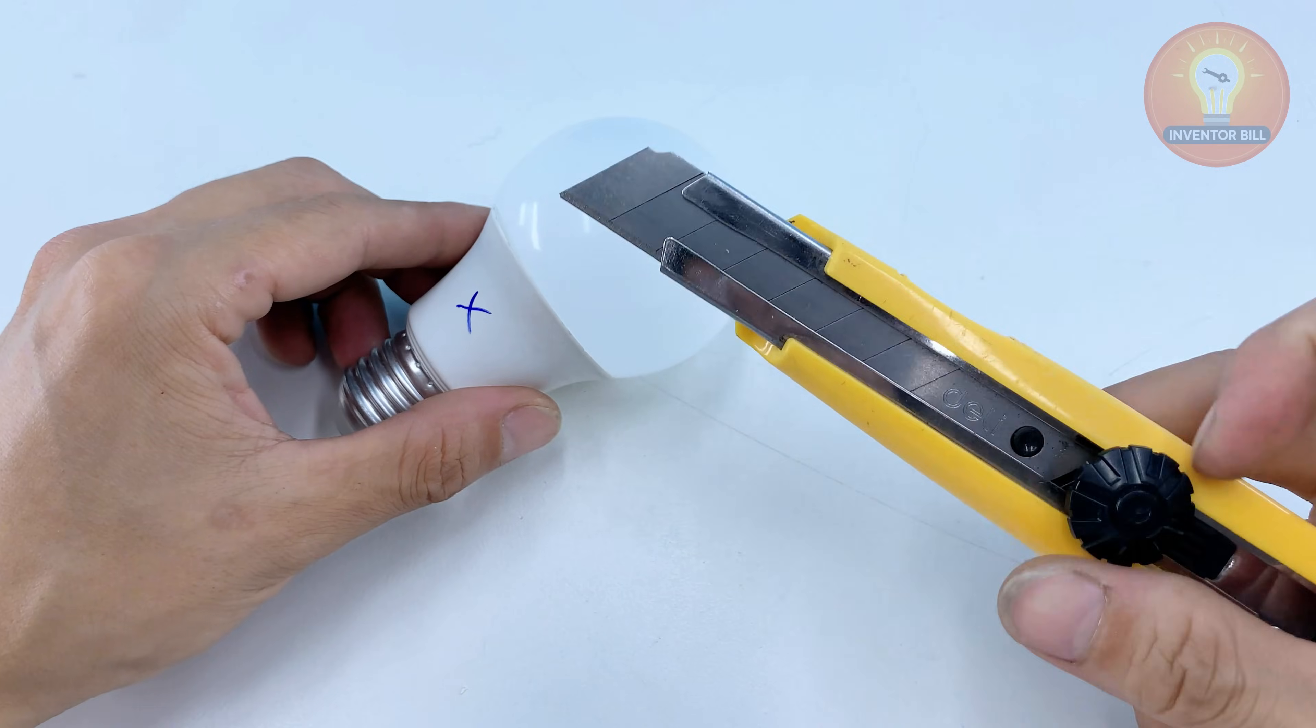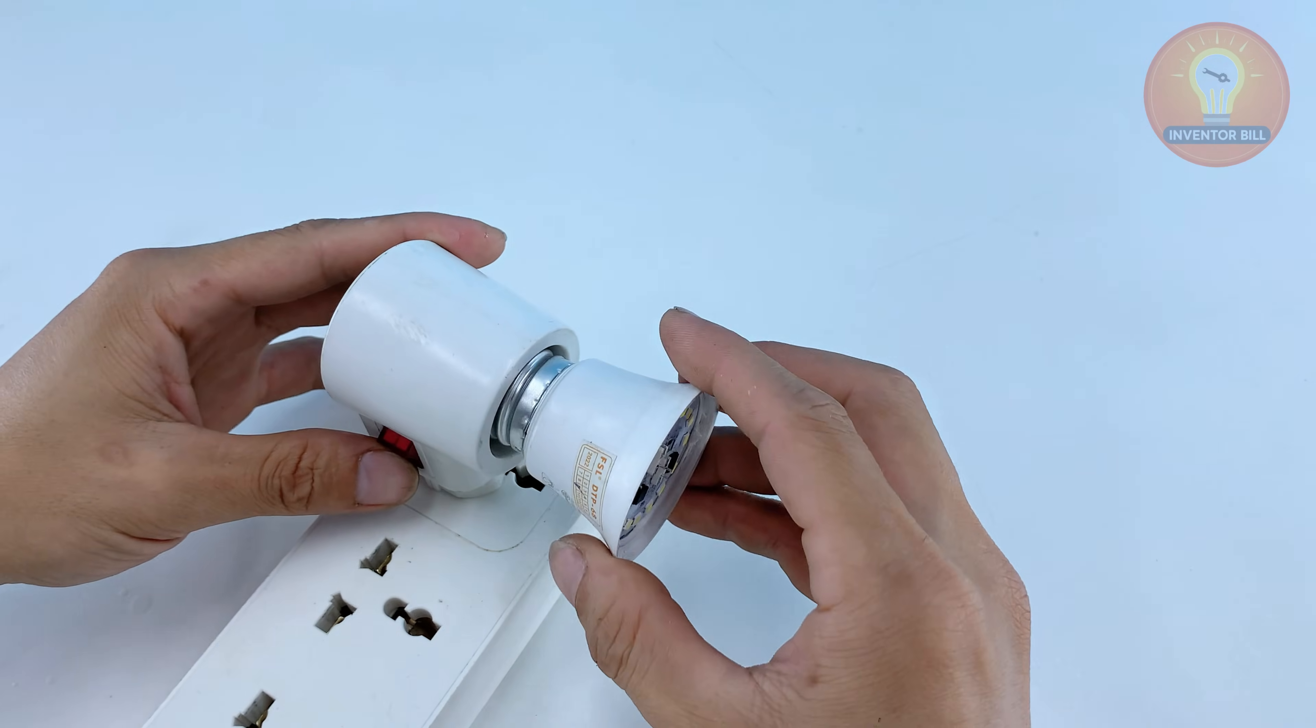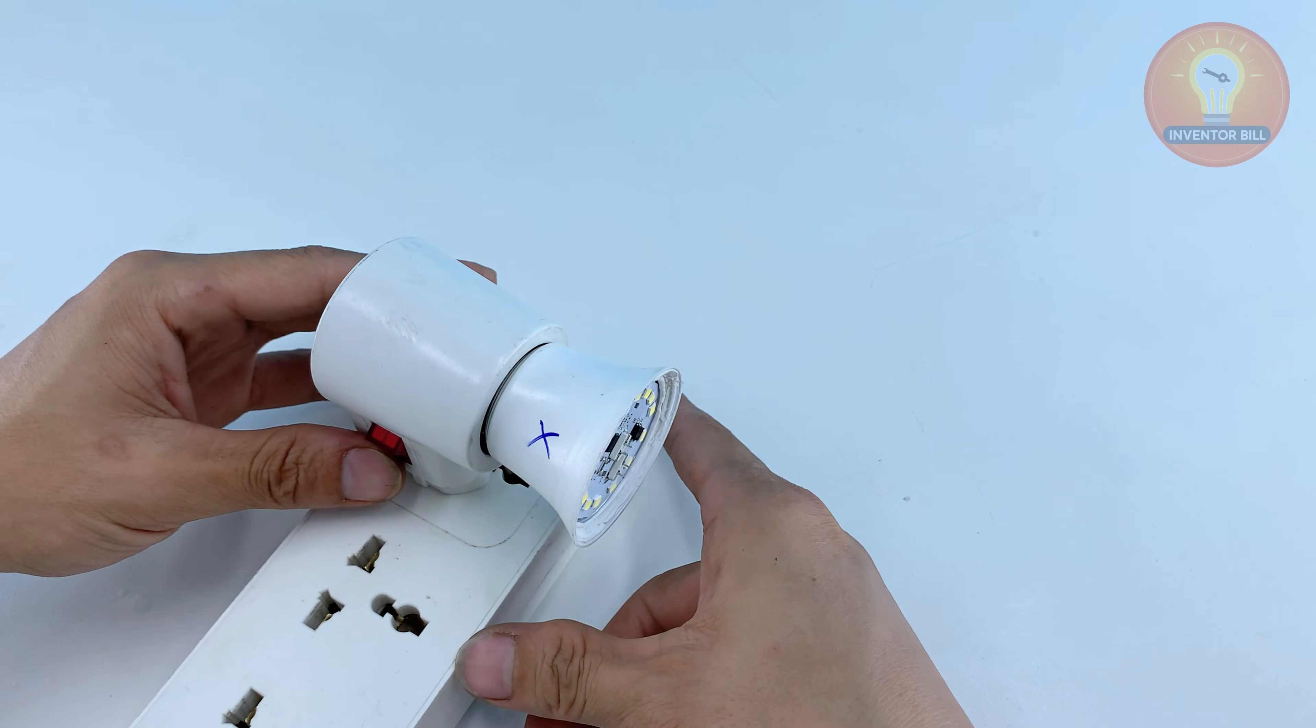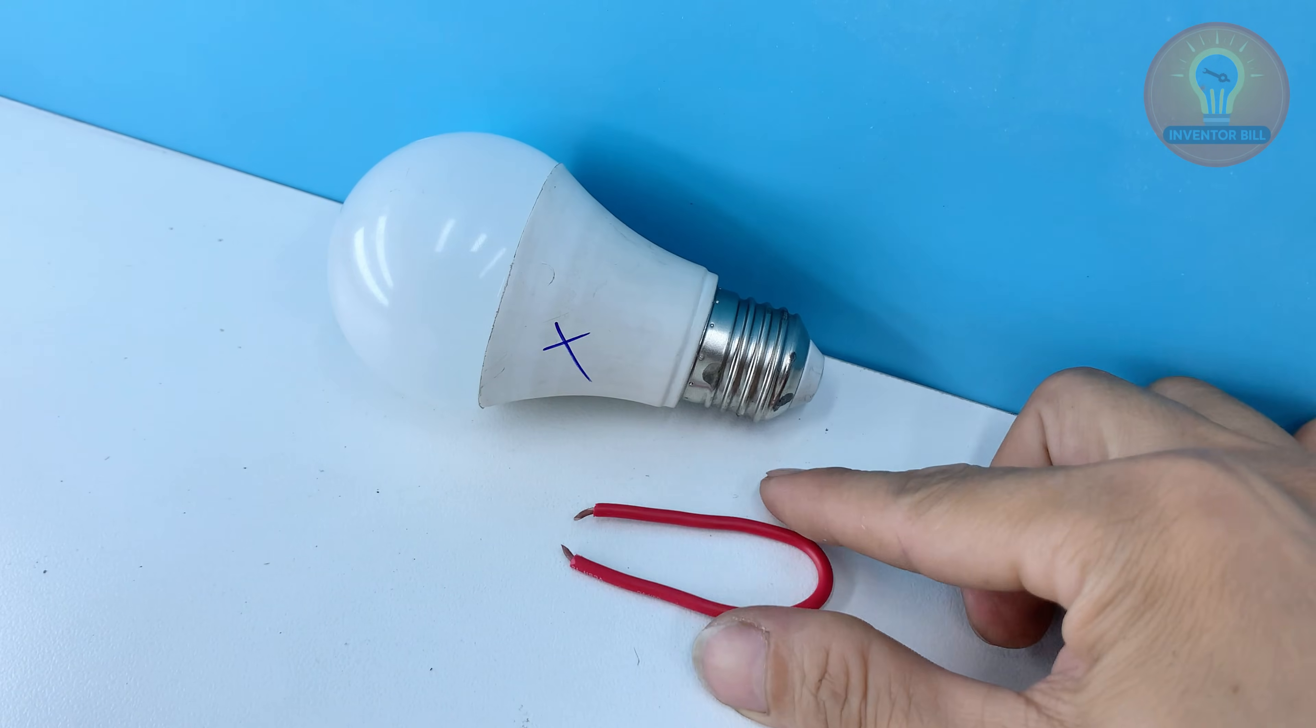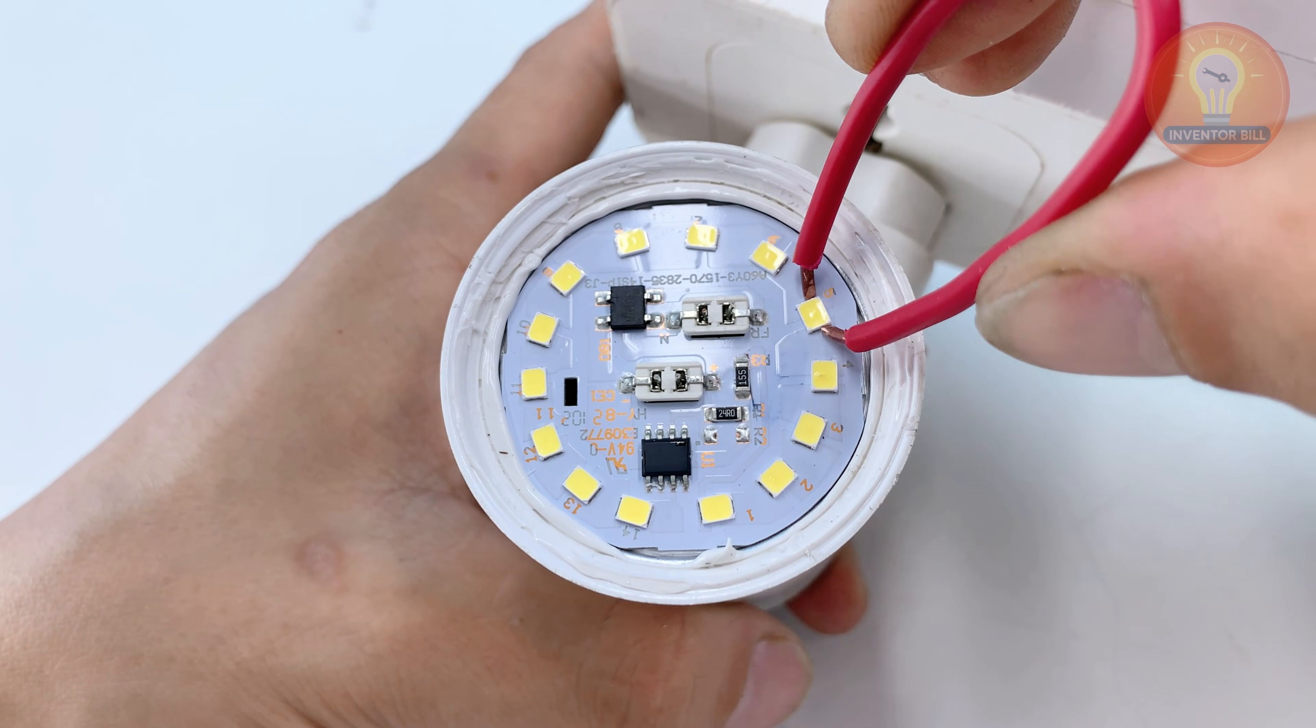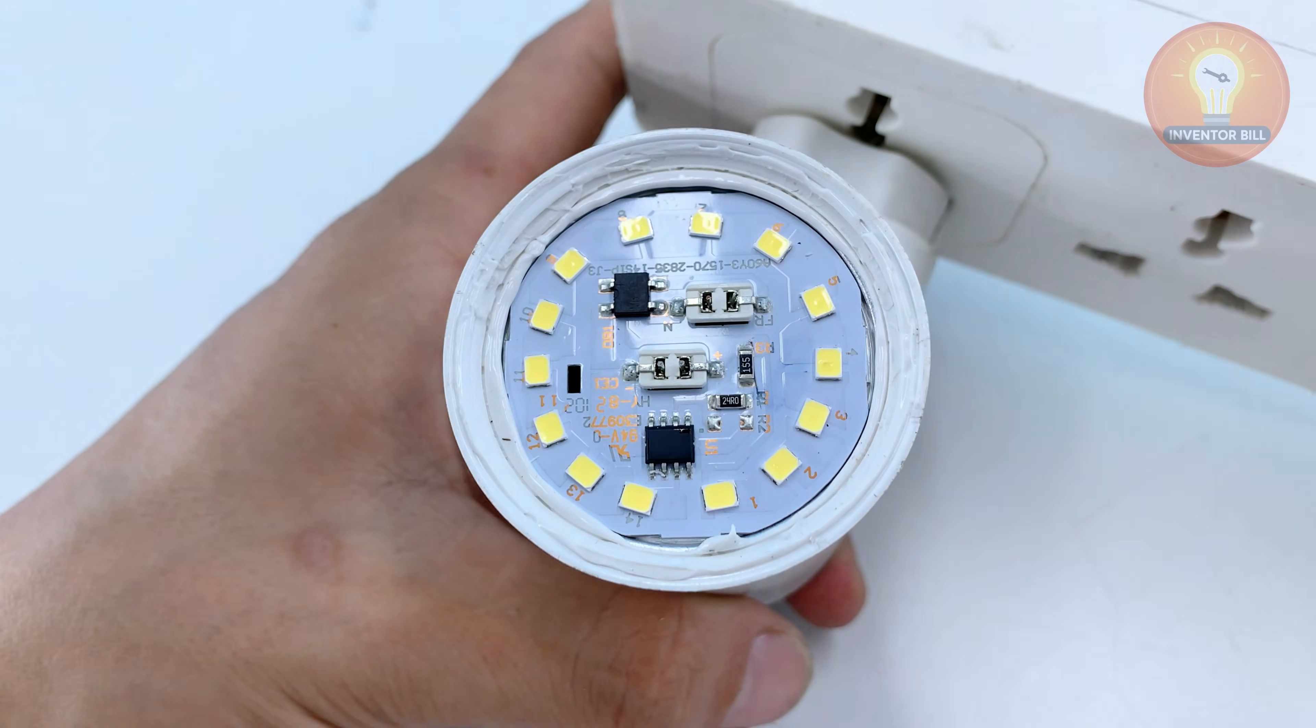Once you have the homemade tweezers ready, take the first broken bulb and open the top cover with a utility knife. Keep your hands steady and work slowly so you do not crack the housing. Plug the LED board into your power source then use your tweezers to touch each LED chip one by one. When you touch the bad chip, the rest of the LEDs will light up.